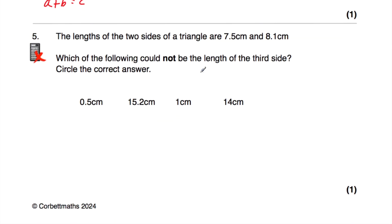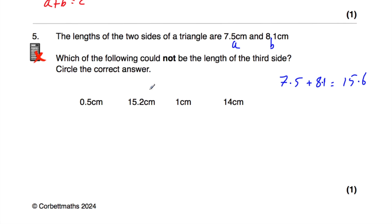Question number five says the lengths of two sides of a triangle are 7.5cm and 8.1cm. Which of the following could not be the length of the third side? The four options are 0.5cm, 15.2cm, 1cm, and 14cm. Let's start with the longer ones. If 7.5 and 8.1 are the two shorter sides, 7.5 plus 8.1 equals 15.6. So 15.2cm and 14cm could exist — both are less than 15.6 and greater than the shorter sides.